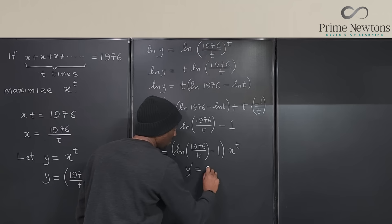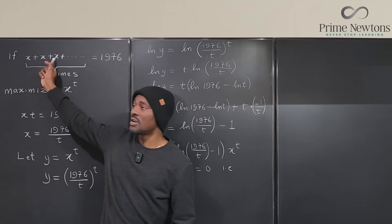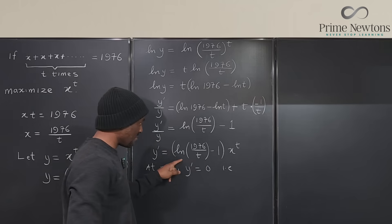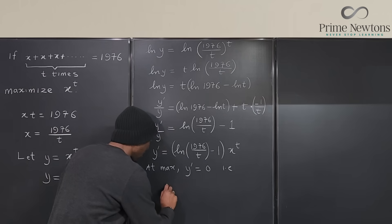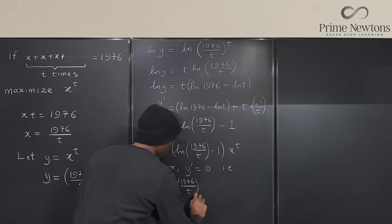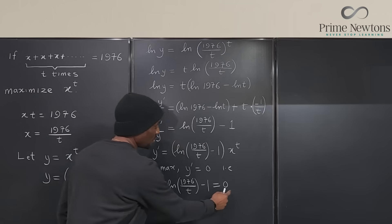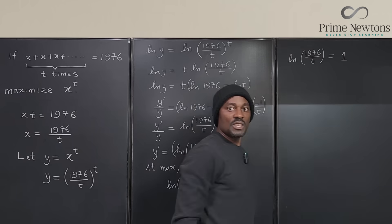So at this point this is equal to zero. At max, Y prime equals zero. What does it mean? If this is going to be equal to zero, we know an exponential function will not be zero as long as X is not zero. Clearly X cannot be zero if we're going to get 1976. It means only this one can be zero, and the only way this side can be zero is if this is equal to this. So we say that LN of 1976 over T minus one equals zero. And what does that translate into? It means this is equal to one. If you move the one over, you have LN 1976 over T is equal to one.